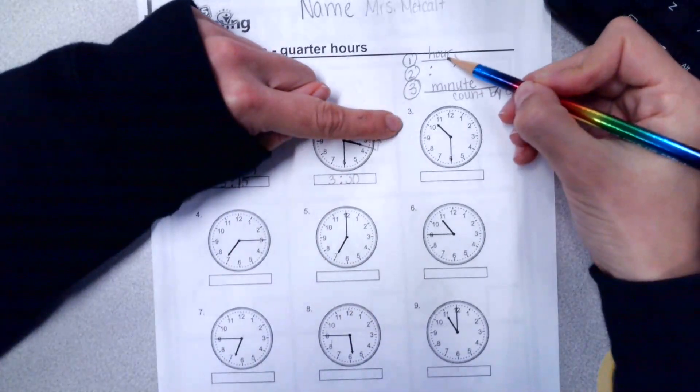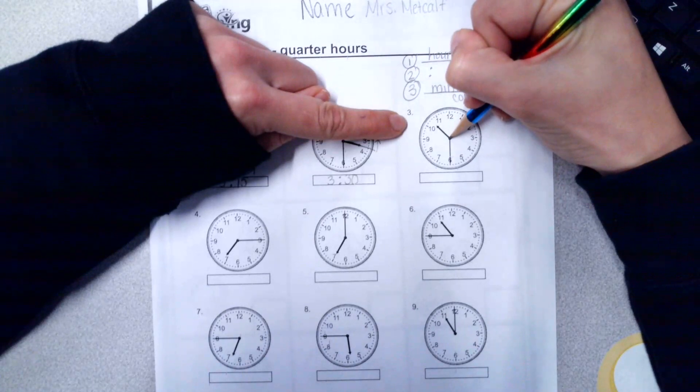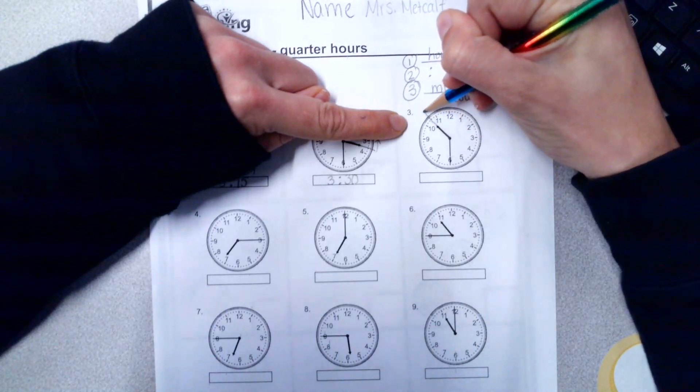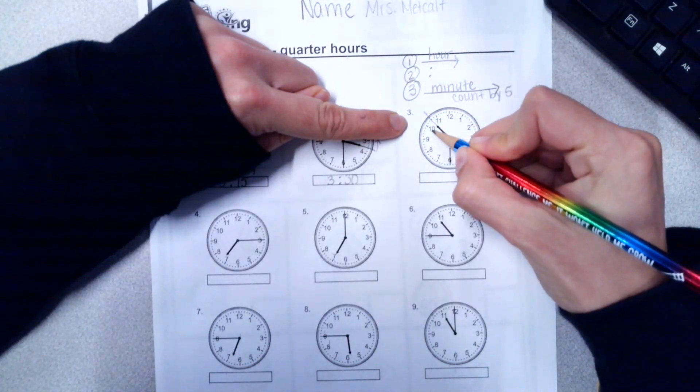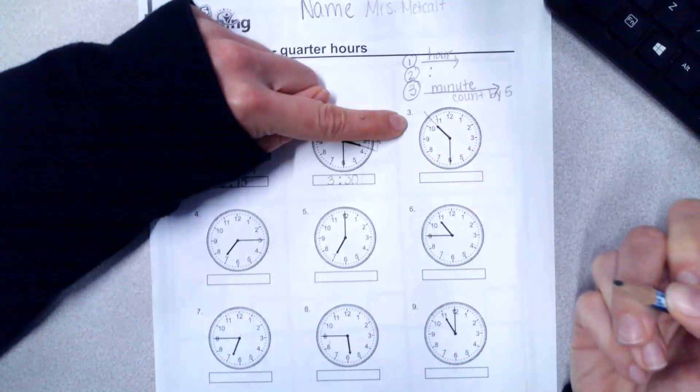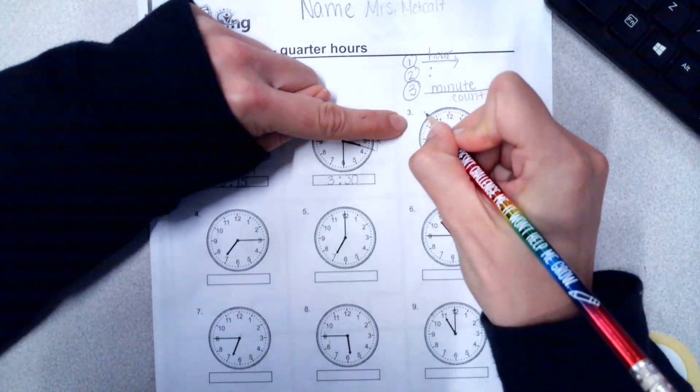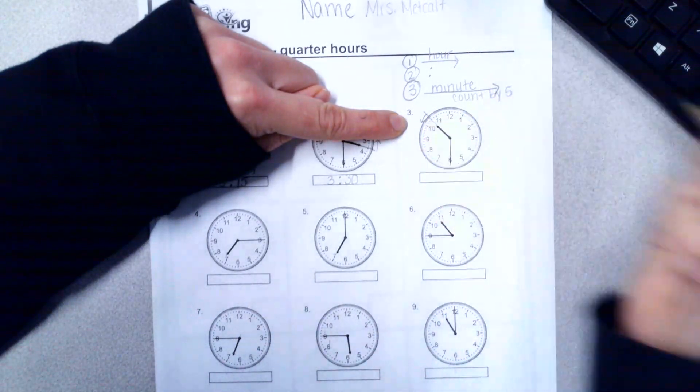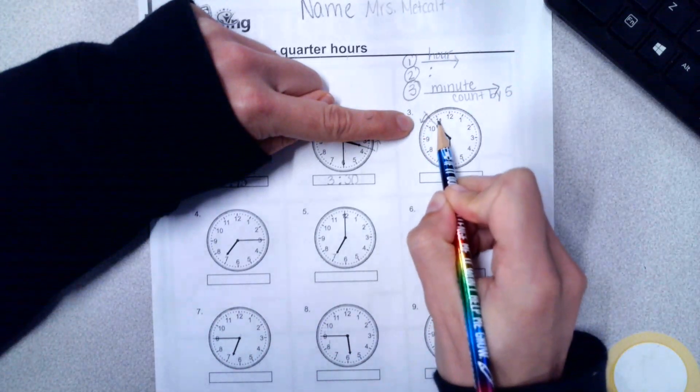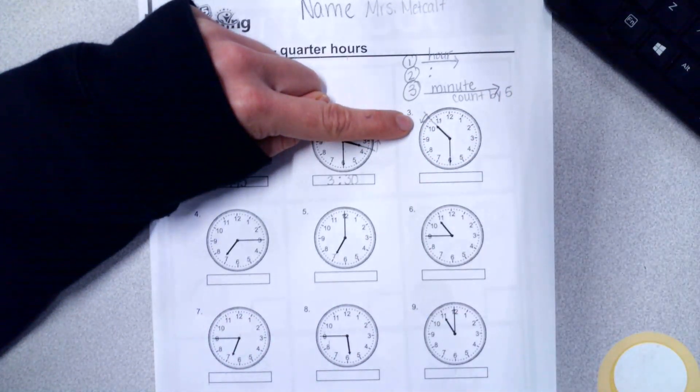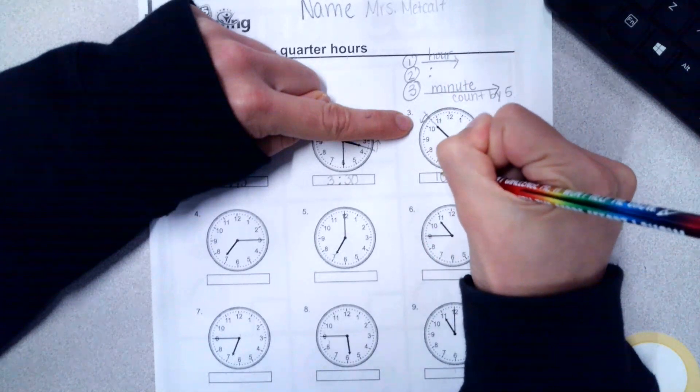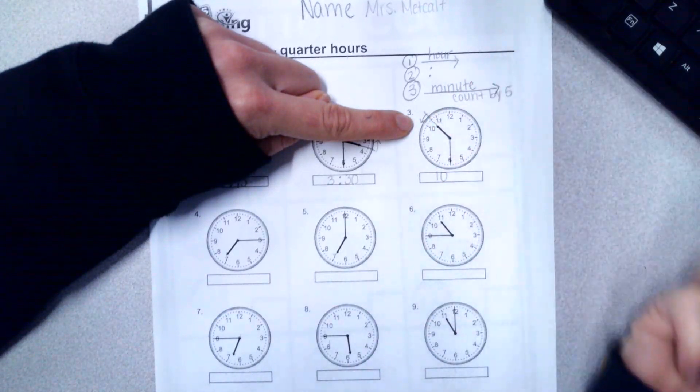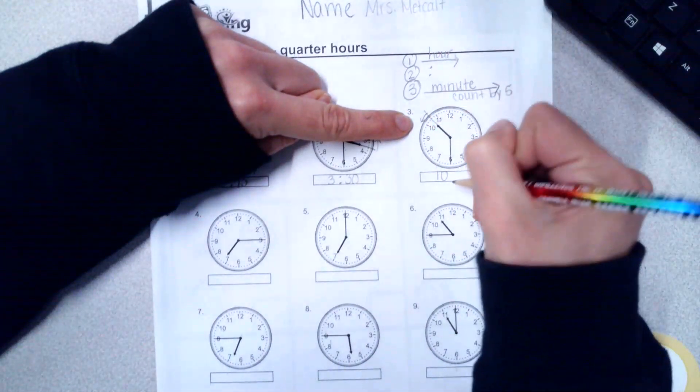Number three, looking at the short hand first, I'm going to draw that out. So it is not at ten. It is not at eleven. I'm going to go backwards on my clock or ten or eleven, which one is smaller? Ten is smaller. So this is still ten o'clock. Then I write my colon.